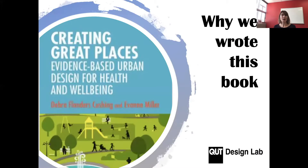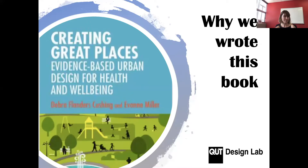We wrote this book when I first got to QUT and started teaching a unit called 'People in Place.' I realized that a lot of the theory used in landscape architecture and environmental design comes from many different disciplines — psychology, sociology, geography, architecture — and there wasn't one book that had all these theories and explored how designers can use them.